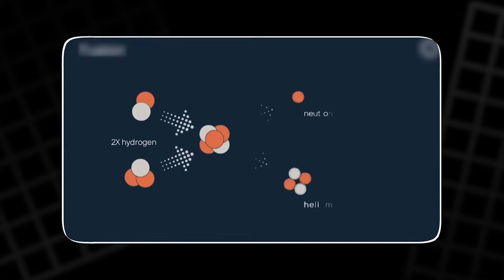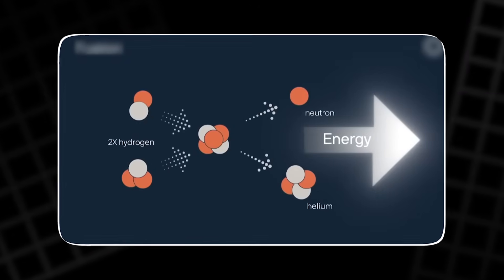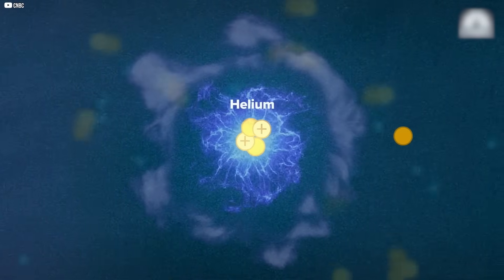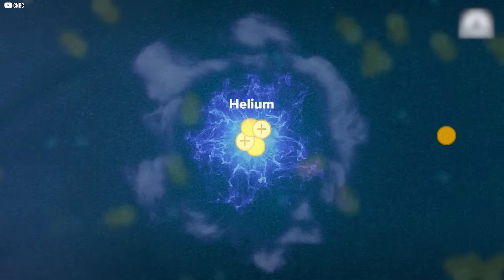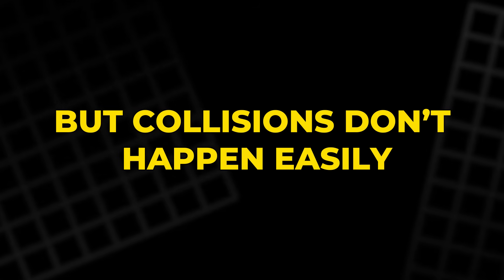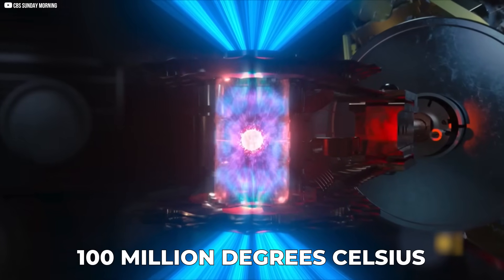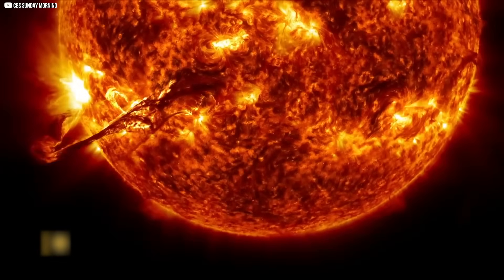Inside this plasma, we mix deuterium and tritium, two forms of hydrogen. When they collide with enough force, they fuse, forming helium and releasing energy. But collisions don't happen easily. The plasma must reach temperatures of 100 million degrees Celsius, hotter than the sun's core.